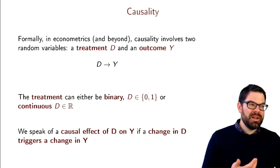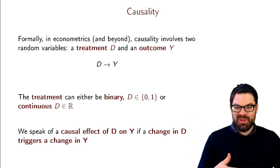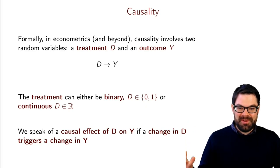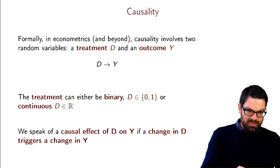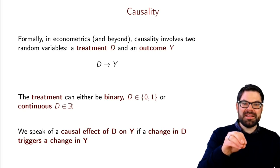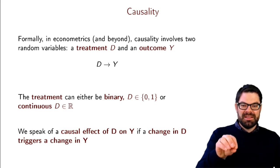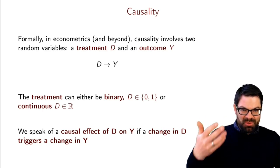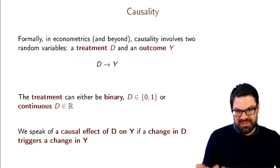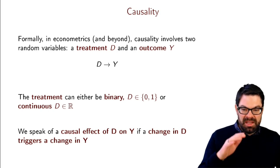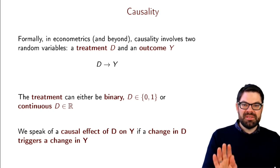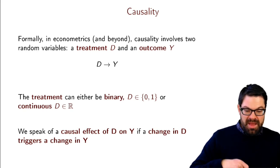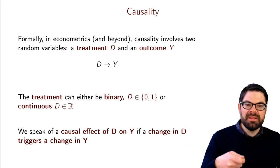We obviously cannot force firms to export or not, or force people to go to the gym or not, for whatever causal effect we want to study. What we do is look at the world and try to find scenarios where we can ascribe a causal interpretation because some force manipulated the treatment for us — this is typically called a natural experiment, more on that later. The important thing is: think about the treatment effect as a manipulation of the treatment by some experimenter that then affects the outcome.